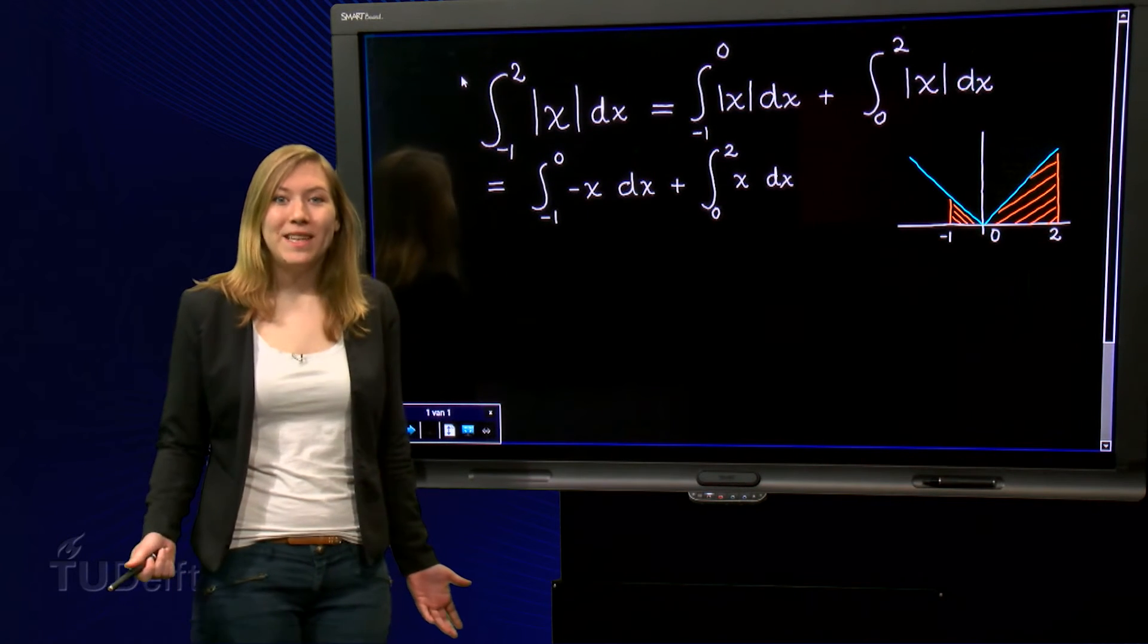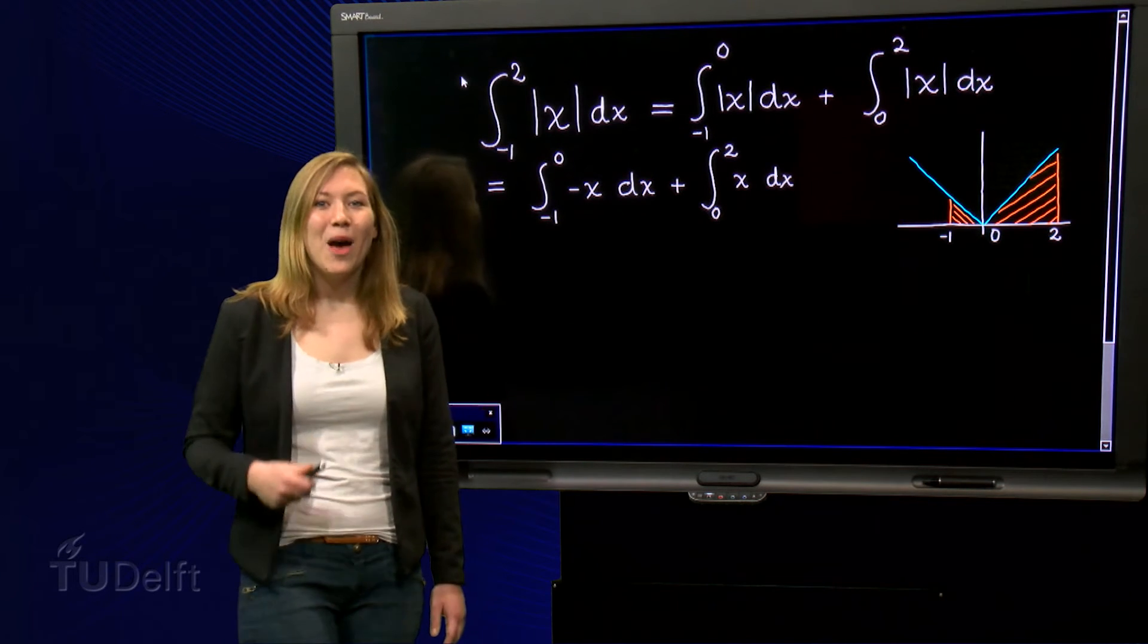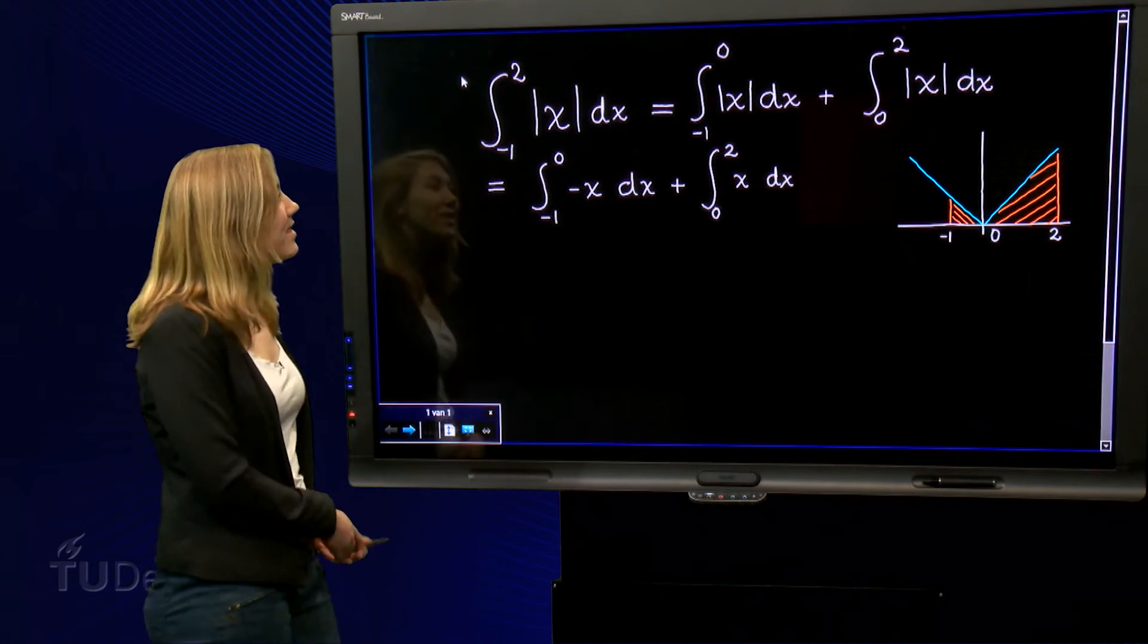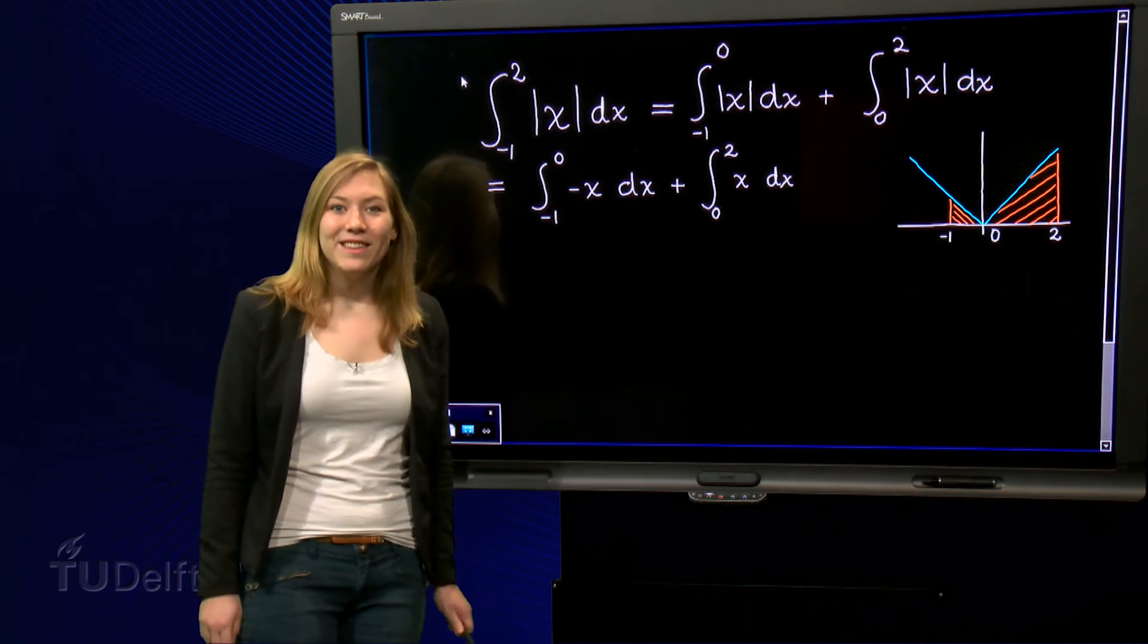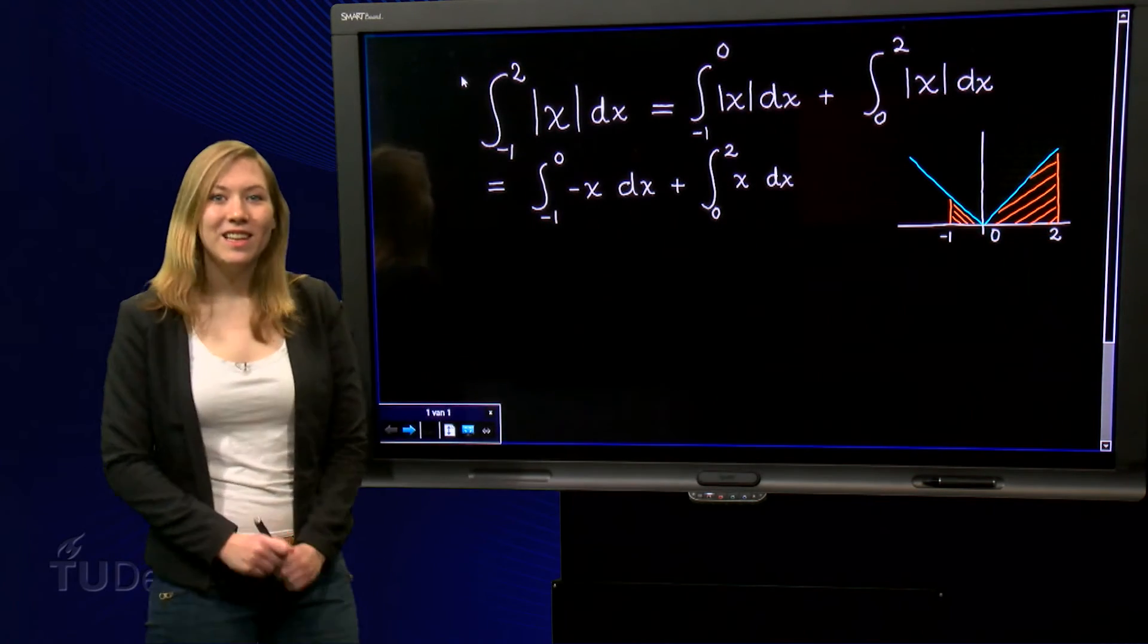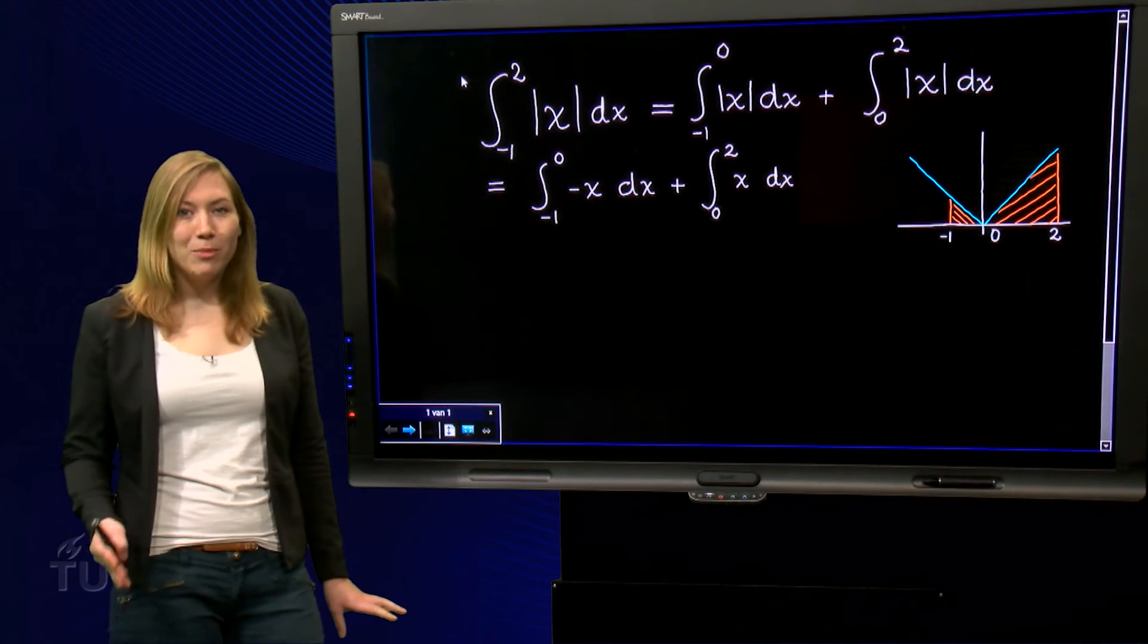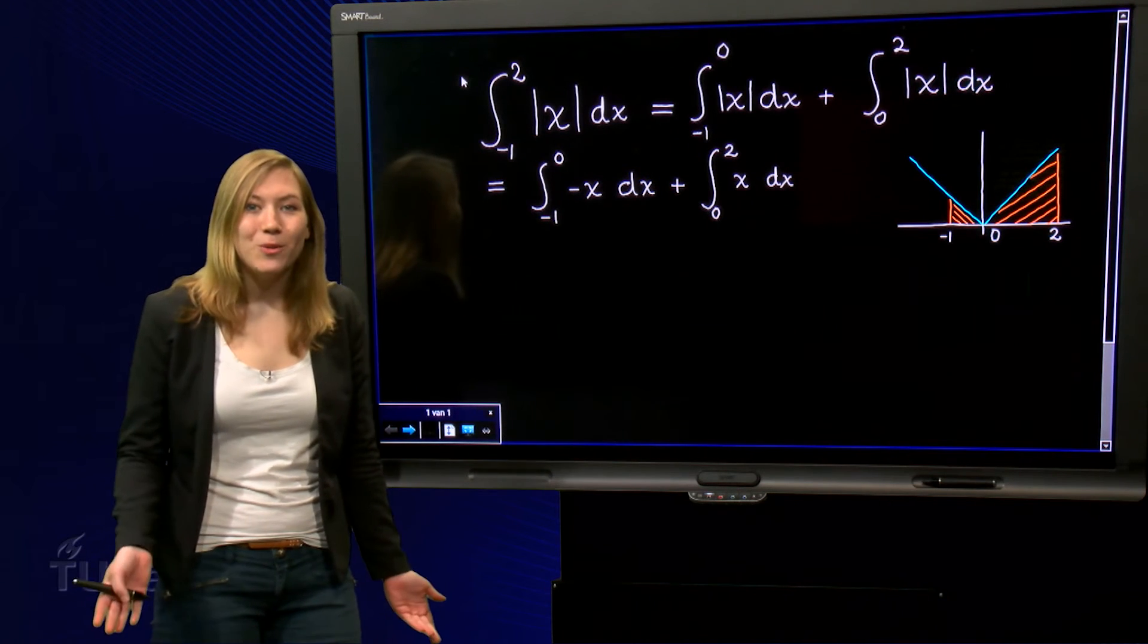What if we just split the integral using property 2 and we take the integral from minus 1 to 0 and add that to the integral from 0 to 2. Now the absolute value of x is just one simple function in each part, so we can substitute the simpler expressions we found.